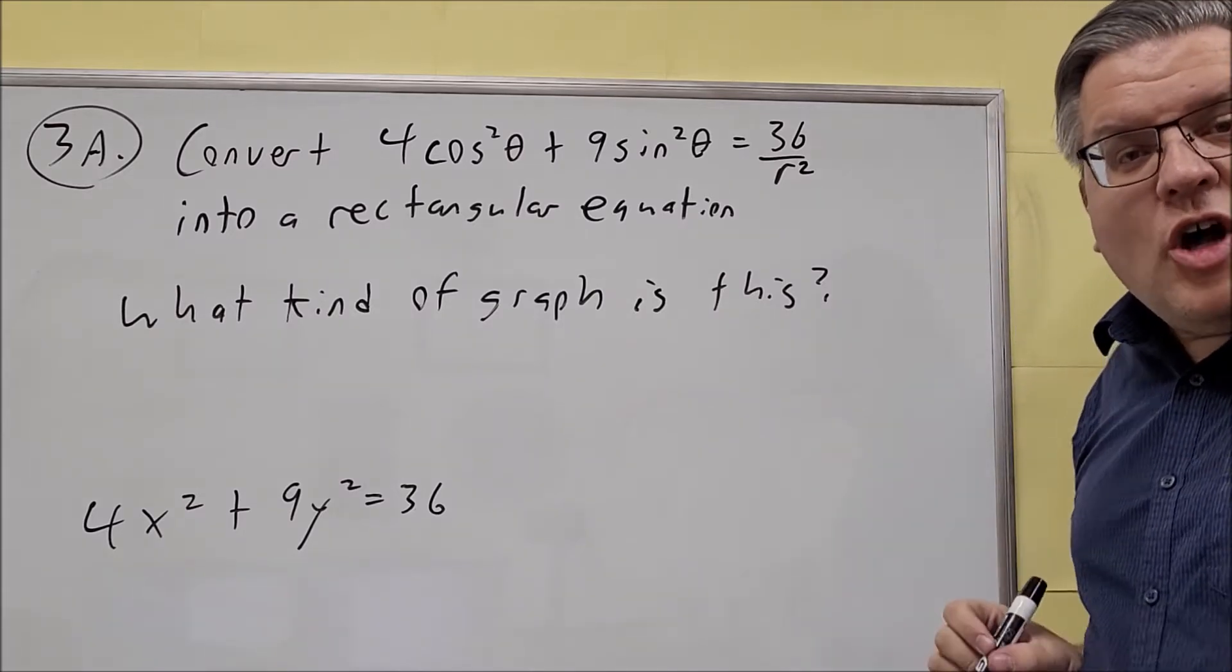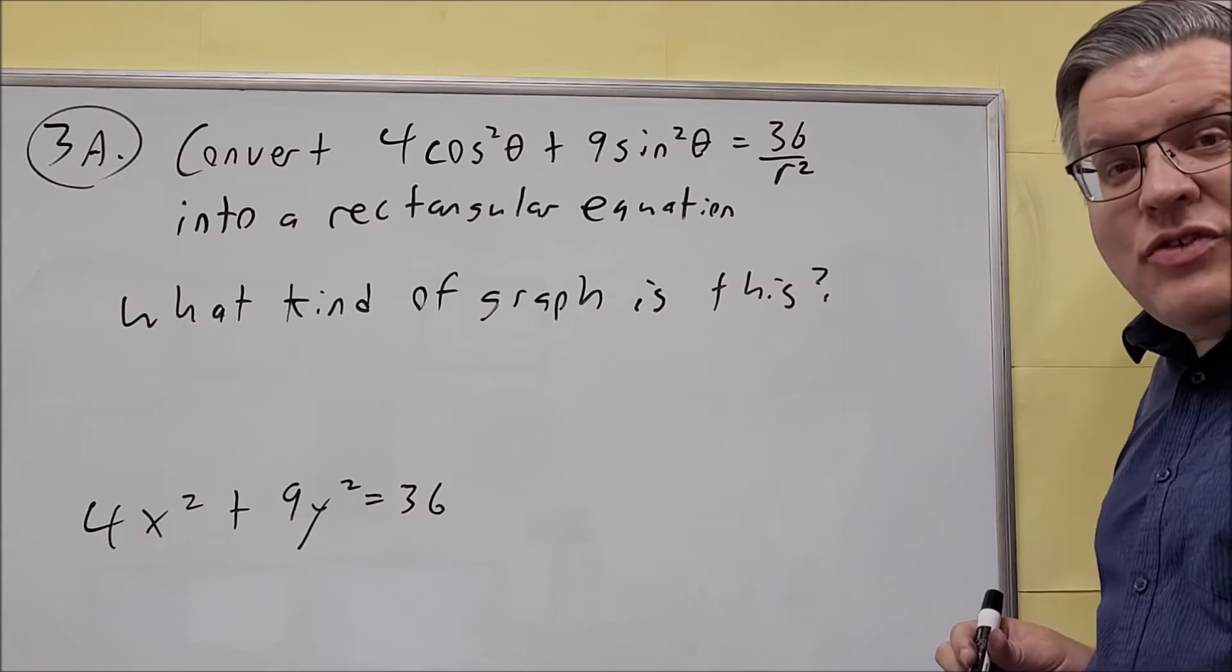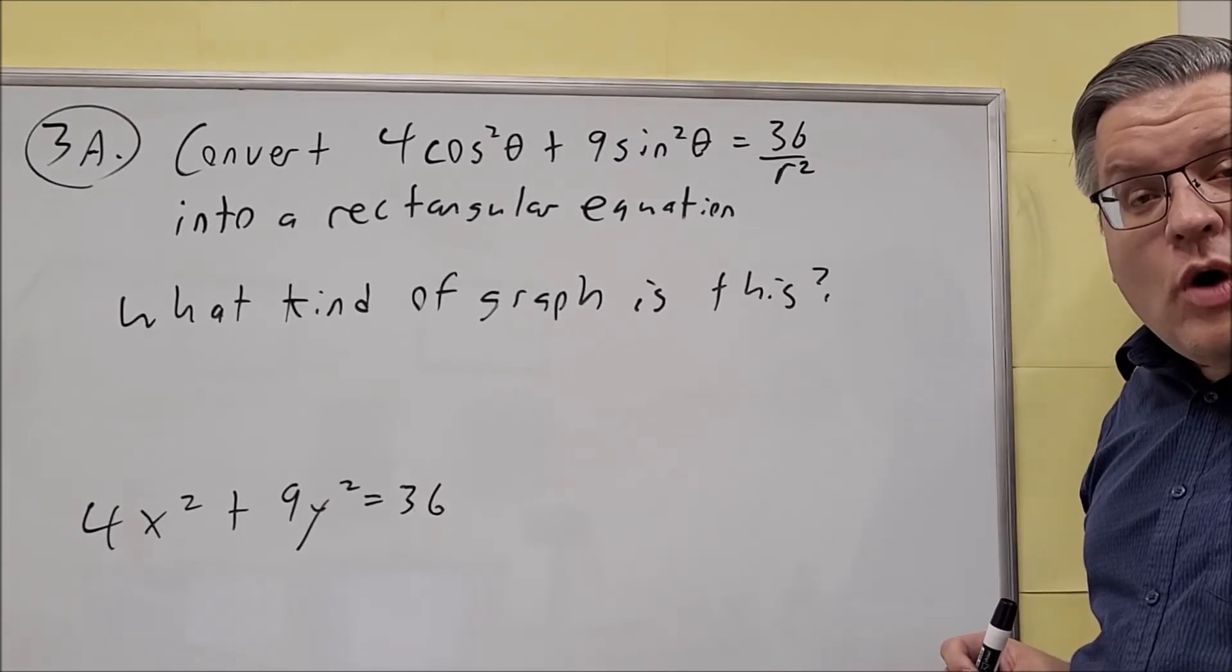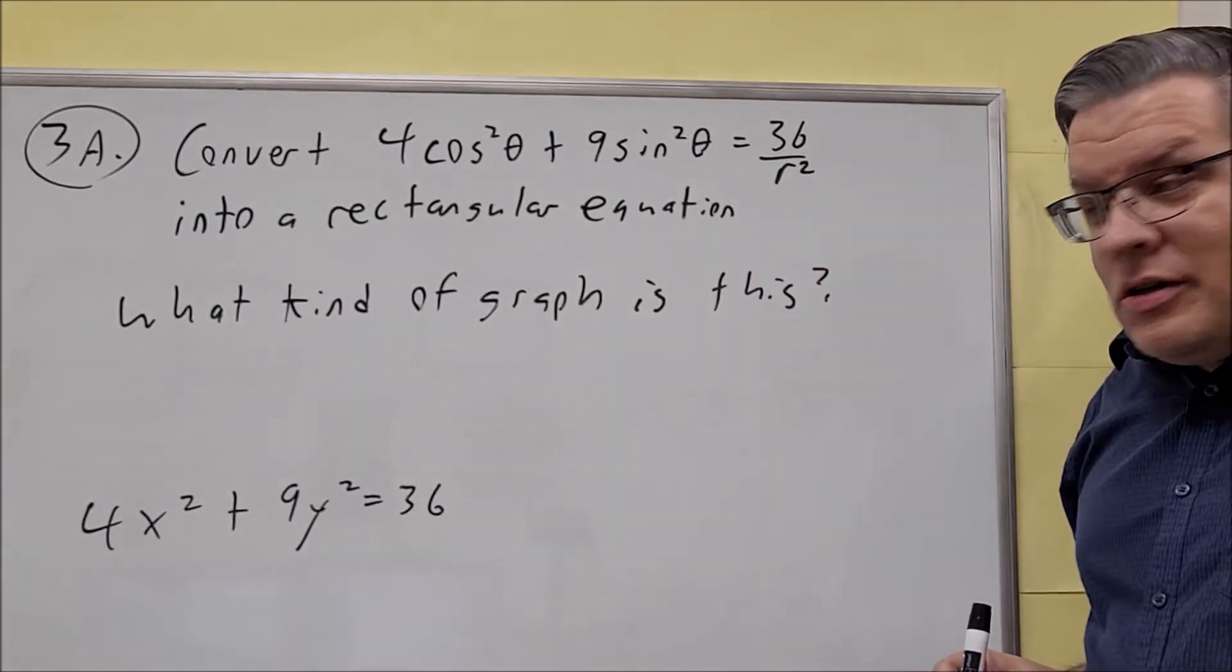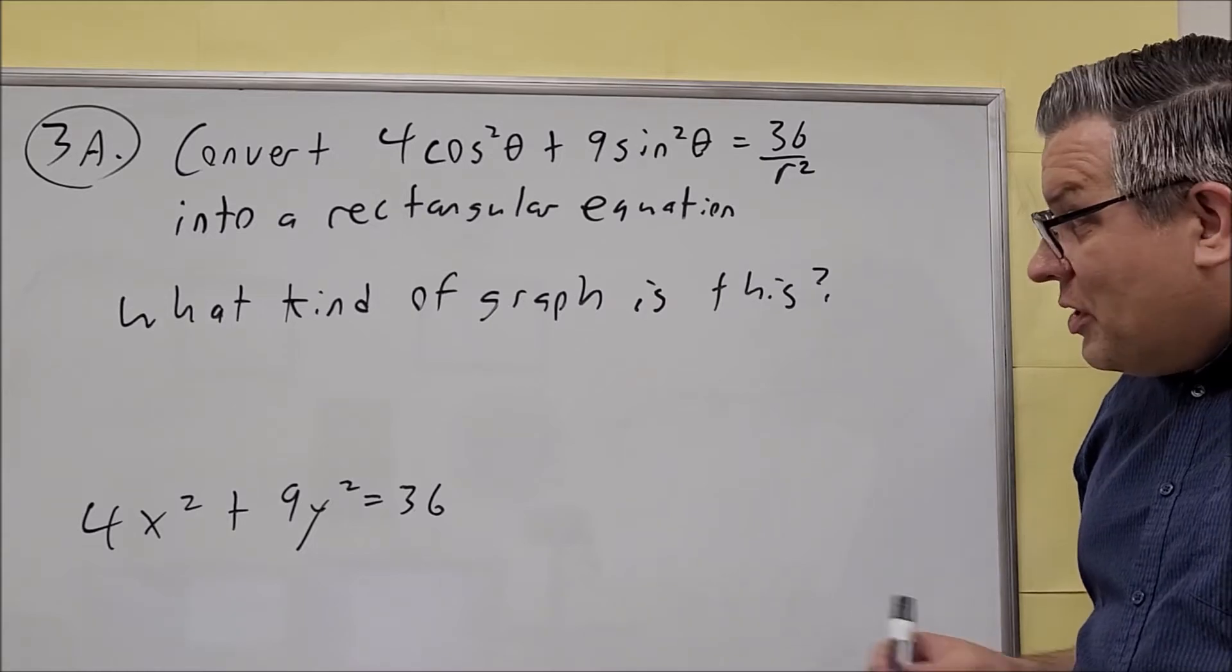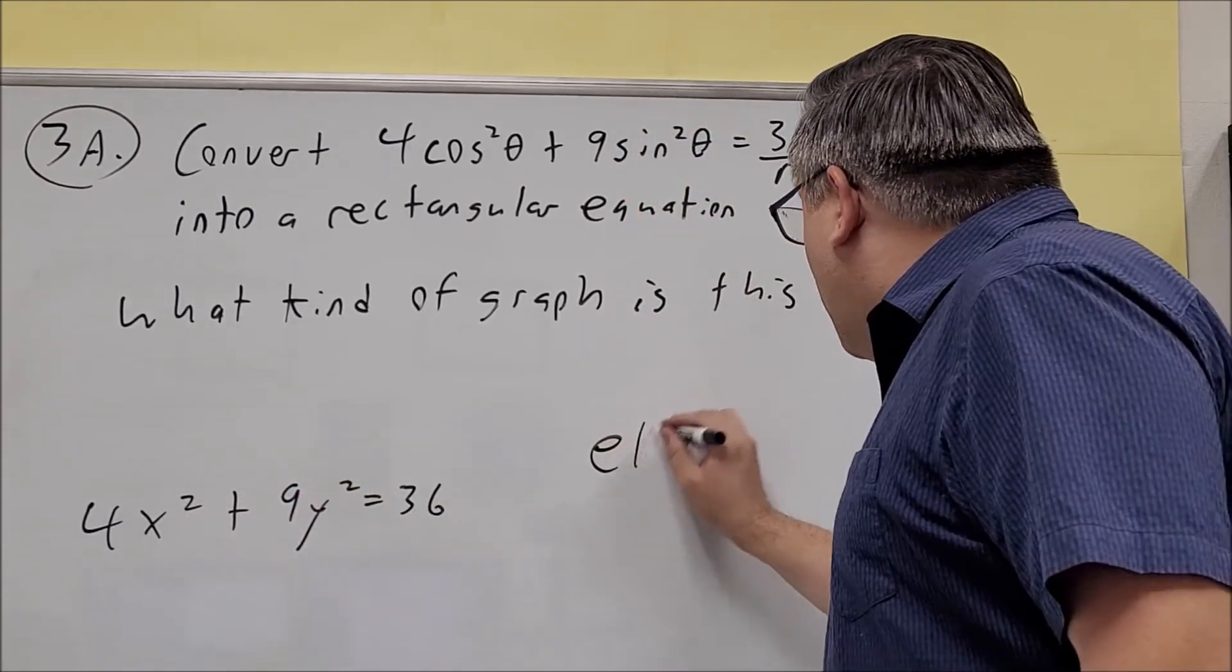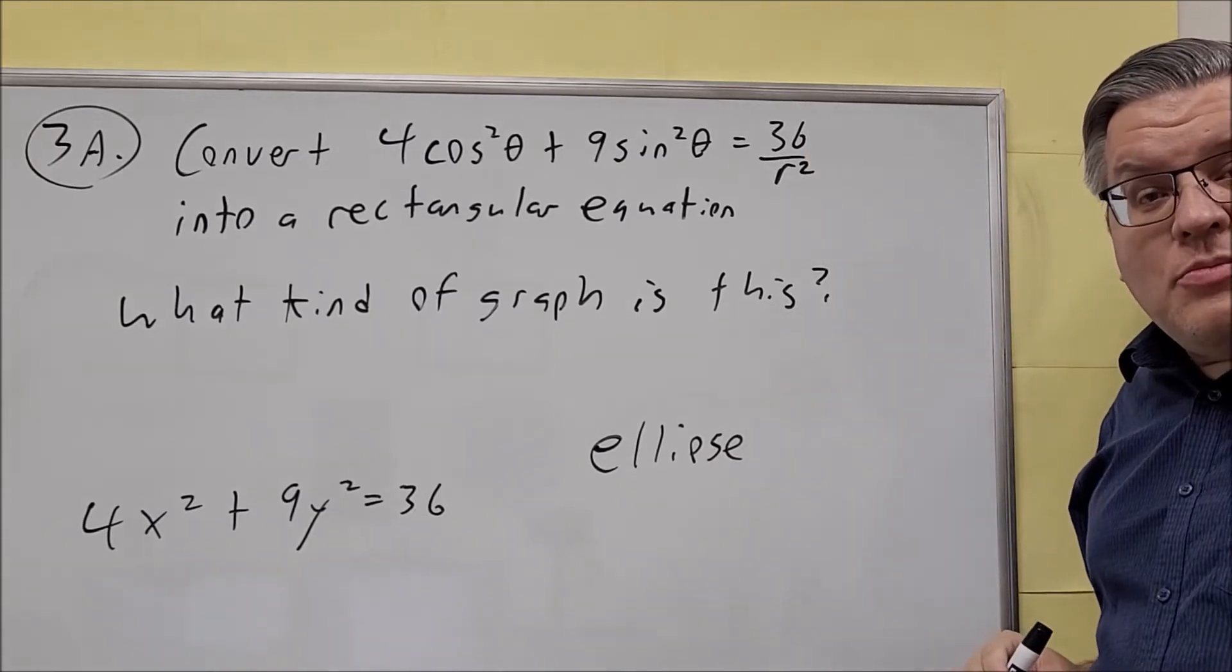All right, and there's some multiple choice available for you for that. But if it asks you for what kind of graph this is, we need to take a look at this one. Notice that both variables we have x squared and y squared, and the coefficients are both going to be different here and positive. So because of this situation, you have x squared, y squared, 4 and 9 are both different. If they ask you which shape is this, it's going to be an ellipse.